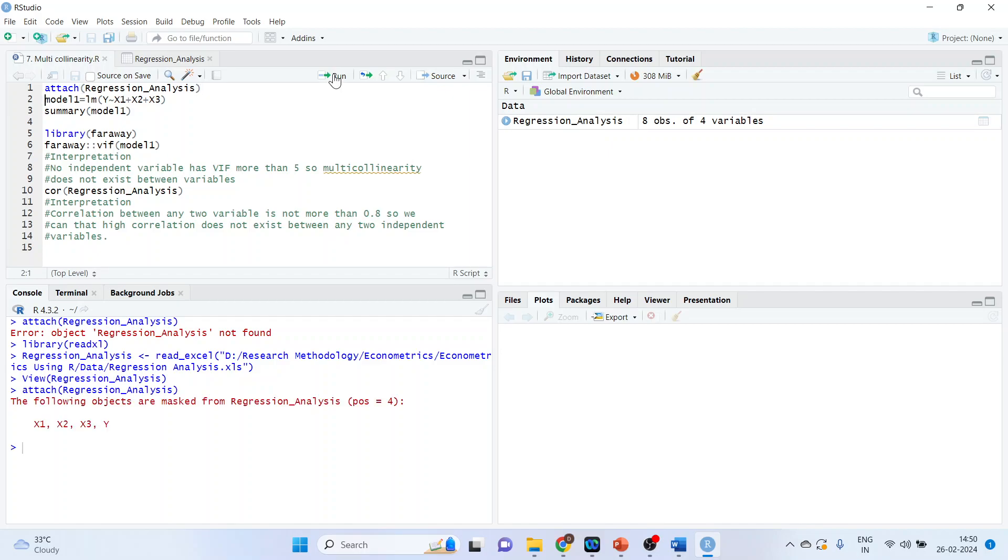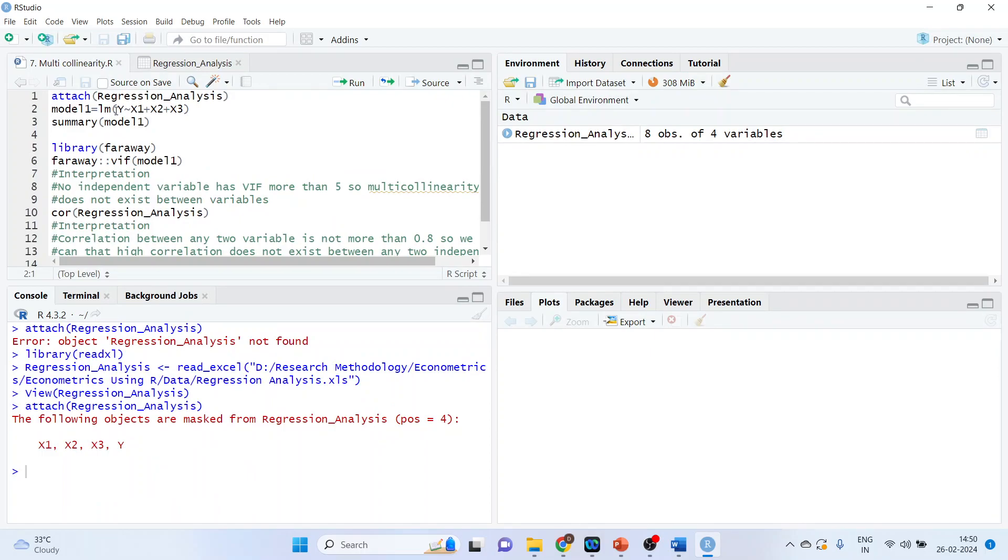Create the model 1. Model 1 is equal to linear model. Let me zoom it. Linear model, round brackets. Y is a dependent variable. This is a sign of tilde, which is on your keyboard on left hand side top below the escape button.